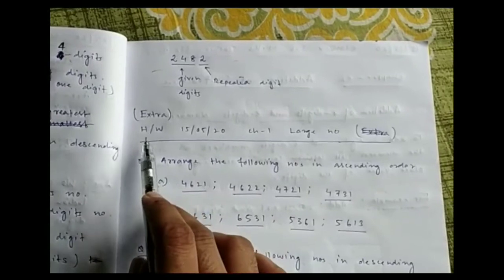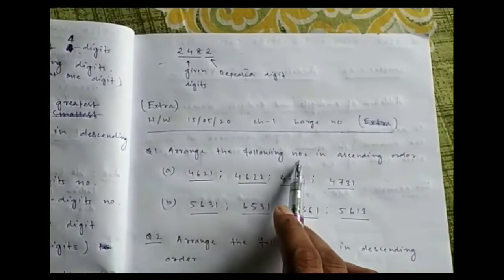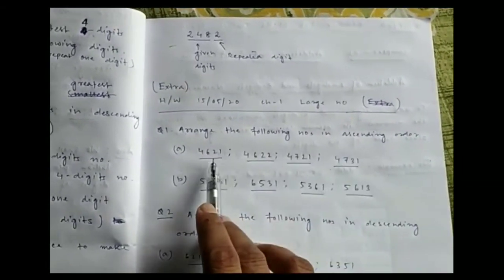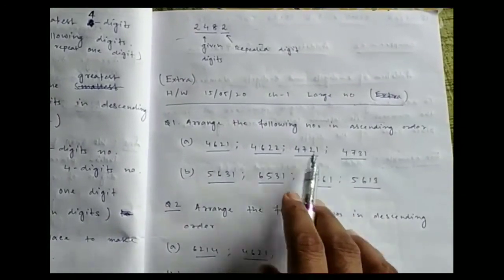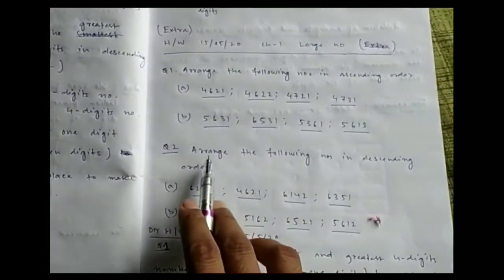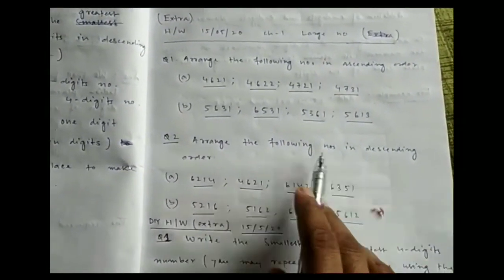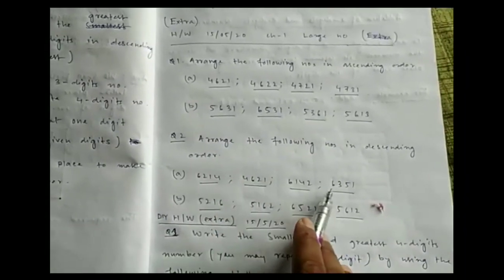I have given some extra homework: arrange the following numbers in ascending order — parts A and B are the same type of question. Also arrange the following numbers in descending order.